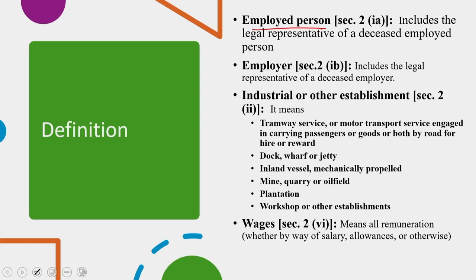What do you mean by an industrial or other establishment? According to Section 2, it means tramway service or motor transport service engaged in carrying passengers or goods by road for hire or reward. It also references dock, wharf or jetty, inland vessel mechanically propelled, mines, quarries, oil fields, plantations, workshop or other establishment. And what do you mean by wages? Wages means all remuneration, whether by way of salary, allowances, or any other case — it has a positive connotation with respect to salary and allowances, expressed in terms of money or capable of being expressed in monetary terms.